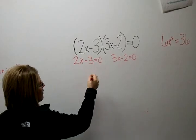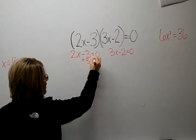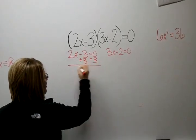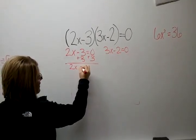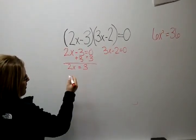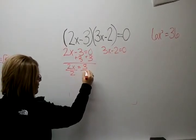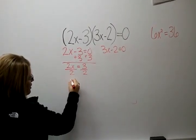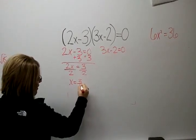Now we're going to solve for x. So we're going to add 3 to both sides, bring down the 2x and that gives us 3. Then we want to get x by itself so we're going to divide by 2 on both sides which gives us x equals 3 over 2.